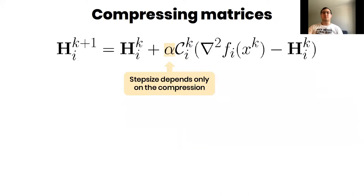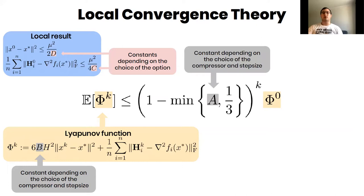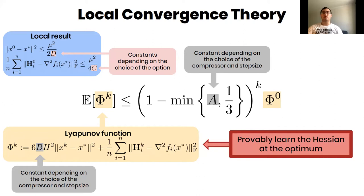We have proved local convergence rate for some Lyapunov function. I would like to note that the rate doesn't depend on the condition number. It only depends on the choice of the compression and step size. And we indeed provably learn the Hessian at the optimum.